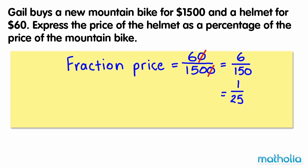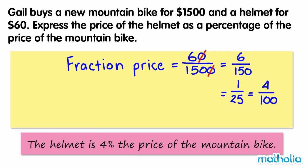To express this as a percentage, we need to find an equivalent fraction with a denominator of 100. Multiplying both numbers by 4 gives 4 over 100. 4 one-hundredths equals 4%. So the helmet is 4% the price of the mountain bike.